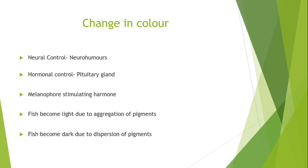That is, pigments are either concentrated or dispersed. If pigments are aggregated, then the fish becomes light in color. And when the pigments are dispersed in chromatophores, then the fish becomes darker. So this depends on the arrangement of pigments in chromatophores — if they are aggregated the fish is light, and if they are dispersed the fish is dark.